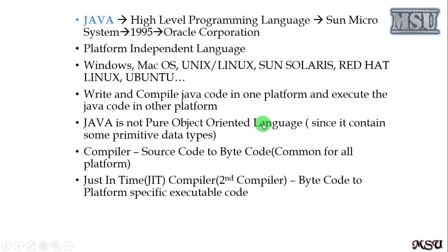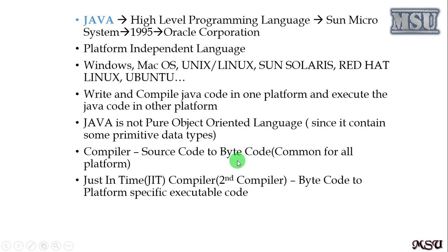Java is mostly an object-oriented language — 99% of the time it is object-oriented. The reason it is not purely object-oriented is that it contains some primitive data types. The compiler converts the source code into bytecode, and this bytecode is common for all platforms — that is why it is called a platform-independent language. A just-in-time (JIT) compiler, which is actually a second compiler, then converts that bytecode into platform-specific executable code.